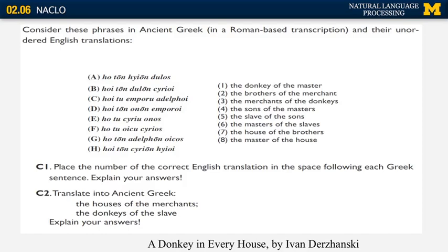Here are some of the problems that you can see on NACLO. Some of them are what we call traditional problems — they are about trying to understand a foreign language and specifically some linguistic phenomenon in that language that you have not seen before. I'm just going to go through those examples very quickly. This one is about ancient Greek; the problem was called 'A Donkey in Every House' from 2007.